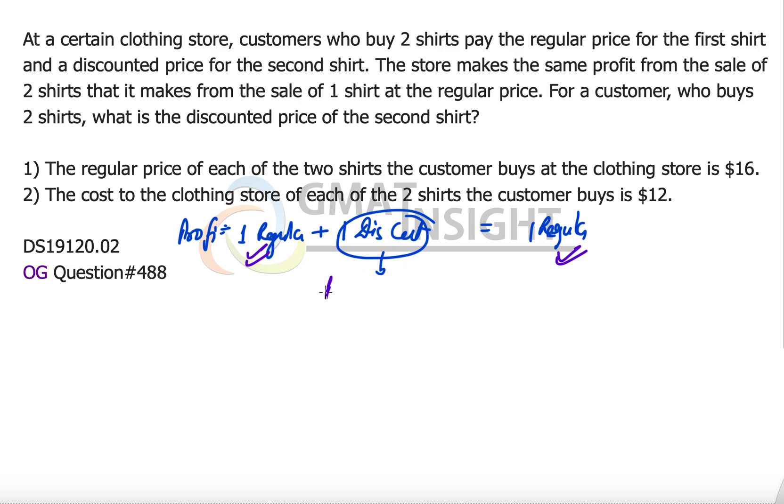That means the profit on discounted shirt is equal to zero, which also means that the cost of a shirt to the store is equal to the discounted price of the shirt.